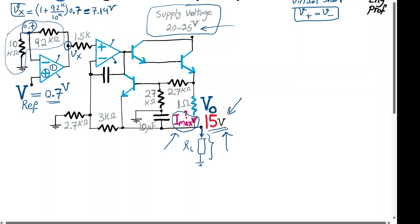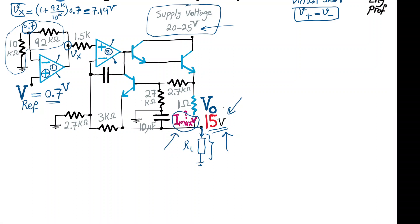Now, assuming op-amp 2 is also in the linear region — not saturated and ideal — its input impedance is infinite. Therefore there is no current flowing through the input terminals, meaning there is no voltage drop across the 1.5k resistor. Therefore Vx appears directly at the positive input terminal of op-amp 2, and because of the virtual short, this Vx of 17.14 volts appears at the negative terminal as well.